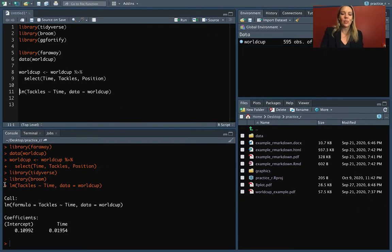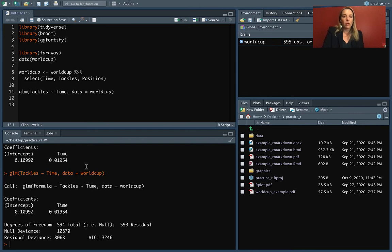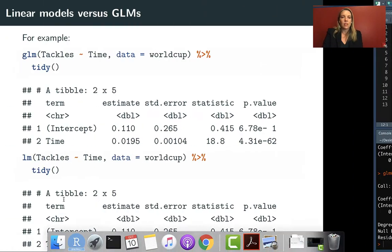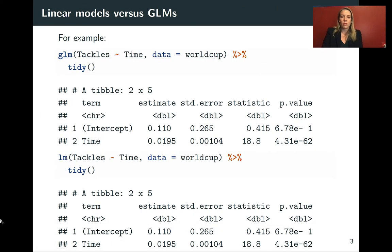You can fit this instead with the GLM function just by using GLM. But the way that you tell it which data set to use and then also the model structure is exactly the same. So we can run that. And if we run the two and compare our coefficients, they're going to be exactly the same for the two ways of fitting the linear regression model.